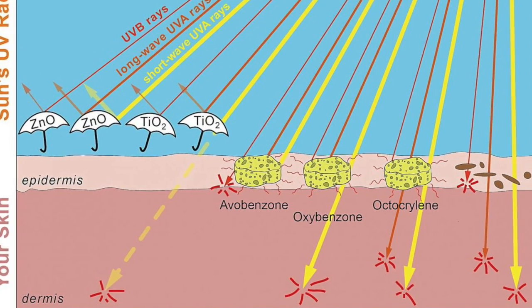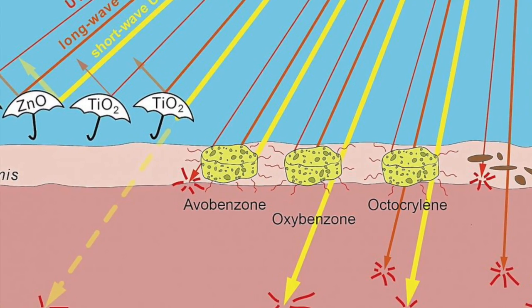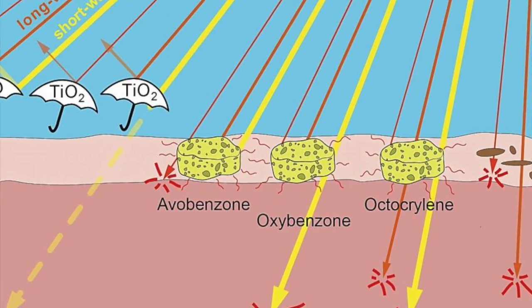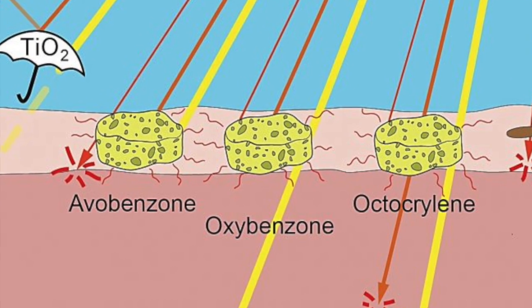The chemical's main purpose in sunscreen is to absorb the harmful UV rays that cause sunburn and DNA damage. The compound forms a barrier on the surface of the skin in order to absorb the radiation before the skin does.